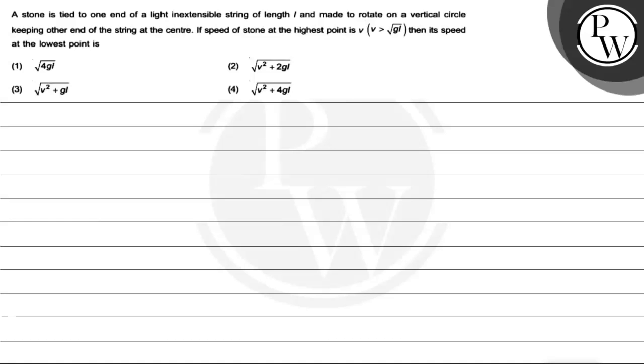Hello everyone, let's see this question. The question says, a stone is tied to one end of a light inextensible string of length L and made to rotate on a vertical circle keeping other end of the string at the center.